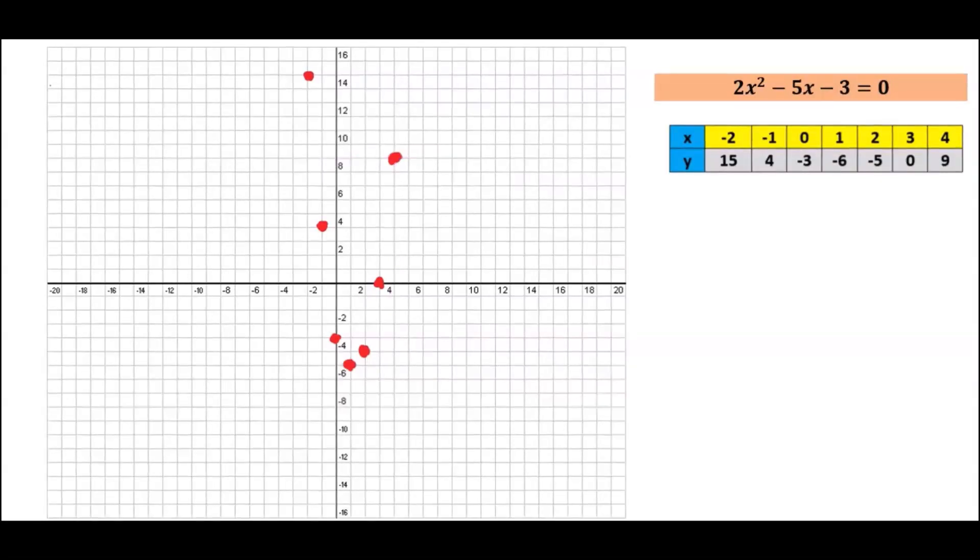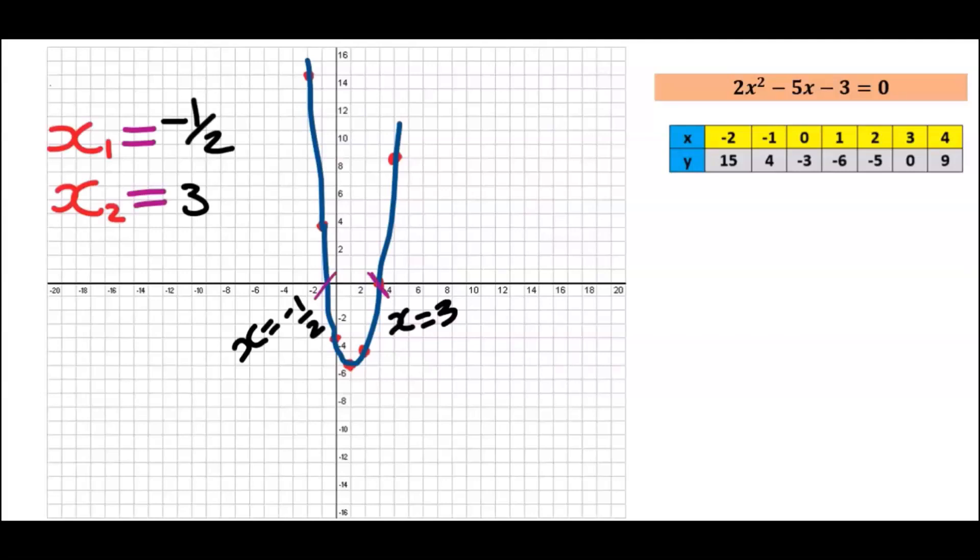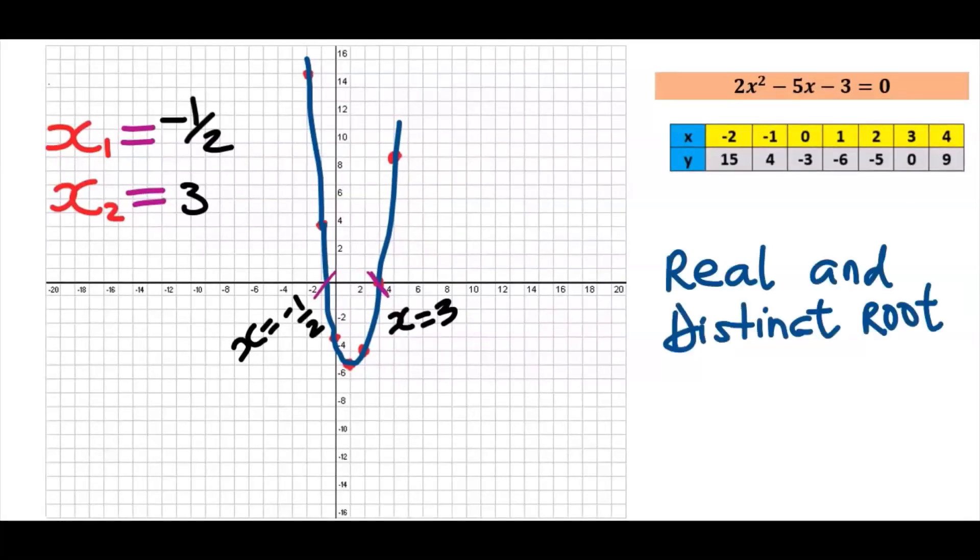We are going to join all the points with a parabolic shape. Determine the points where the curve cuts the x-axis. The curve cuts the x-axis at minus one-half and at point x equals 3. When a curve cuts the x-axis at two different points, it is called real and distinct roots.